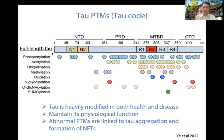We suspect that certain PTM combinations could be predictors for the onset of the disease. And since aging is the primary risk factor for AD, in this study we analyzed Tau PTM involvement in wild-type mice during normal aging.